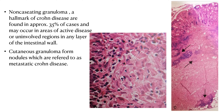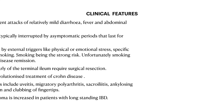Non-caseating granulomas, a hallmark of Crohn's disease, are found in approximately 35% of cases and may occur in areas of active disease or uninvolved regions in any layer of the intestinal wall. As seen in the figure, arrows show granulomas in the intestinal wall. Cutaneous granulomas form nodules referred to as metastatic Crohn's disease, though this does not imply cancer involvement.